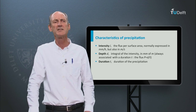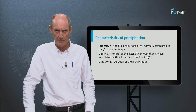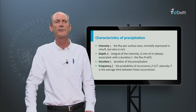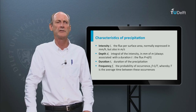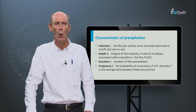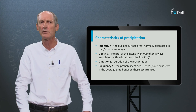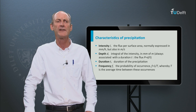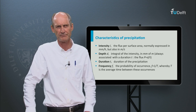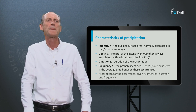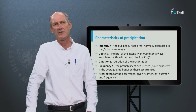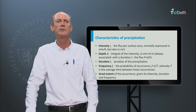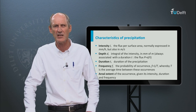So always present precipitation as a flux: P is d over t. Then there is the frequency or probability of occurrence. A rainfall event always has a probability of occurrence, which is the more important when we speak of extreme precipitation. Finally, there is the aerial extent of the event, which is extremely important if we want to interpret a point observation of precipitation.